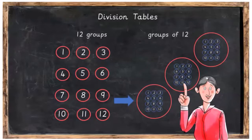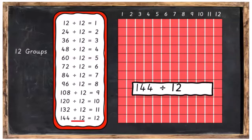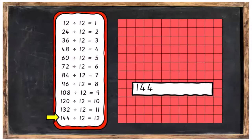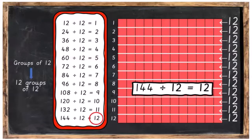Let's have a look at the division tables to see what this means. We're going to start on the number 144. Divide it into 12 groups and you're going to have 12 in each group. The other way of saying it is 144 divided into groups of 12, and you're going to have 12 groups of 12. Sort of similar but a little bit different.